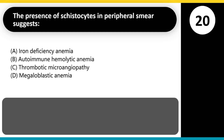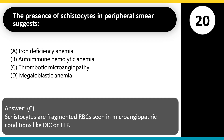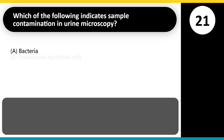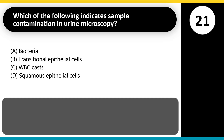The presence of schistocytes in a peripheral smear suggests: A. Iron deficiency anemia. B. Autoimmune hemolytic anemia. C. Thrombotic microangiopathy. D. Megaloblastic anemia. Answer: C. Schistocytes are fragmented RBCs seen in microangiopathic conditions like DIC or TTP.